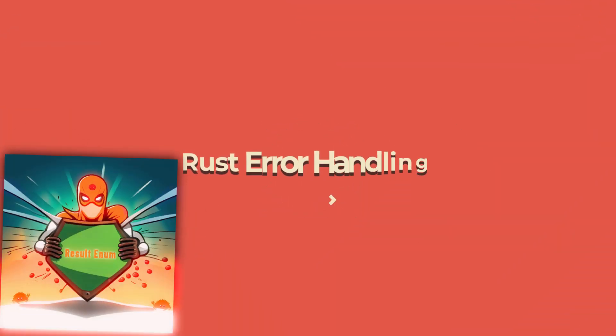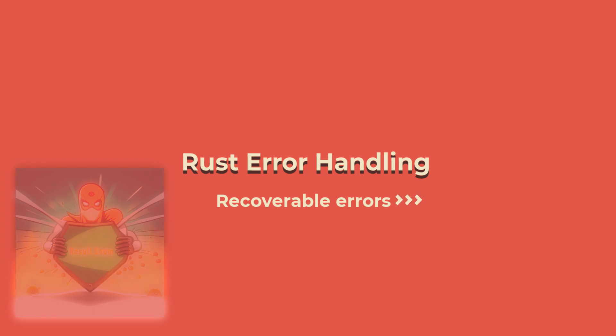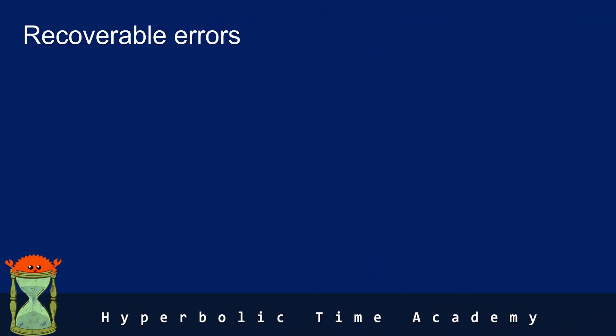Hello everyone and welcome back to the channel. Today we are talking about recoverable errors with the result enum. This is the second video in the Rust error handling topic, so if you haven't watched the first video, please go ahead and click on the link in the description.